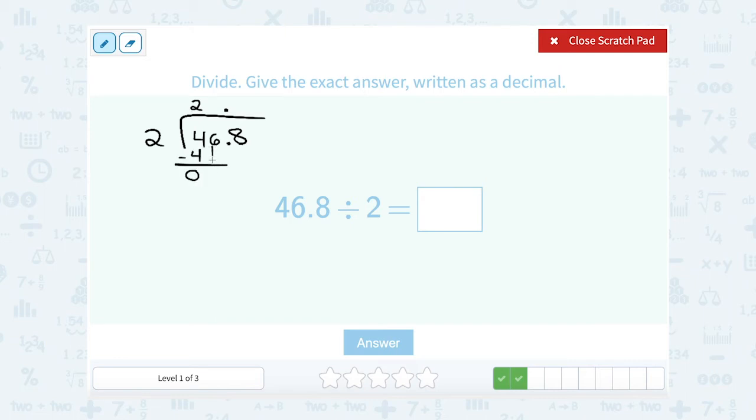Next, I have to bring down the 6. 2 goes into 6 three times. 2 times 3 gives me 6, that's 0 left over. And then I have to bring down the 8. And 2 goes into 8 four times. 4 times 2 gives me 8, so that's 0 left over. So 46.8 divided by 2 gives me 23.4.